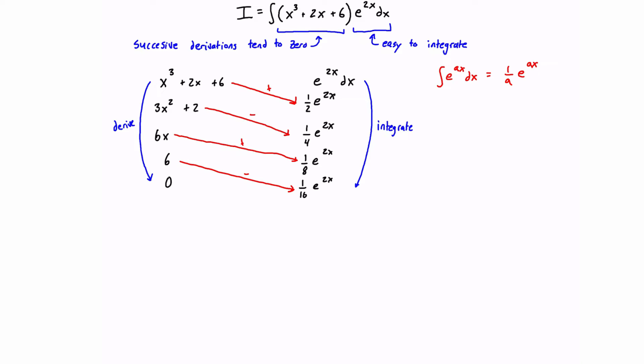And then the solution to our integral is just going to be the sum of the products along these diagonals, taking care to apply the plus or minus sign in our summation of each product. So let's actually write that out one term at a time.